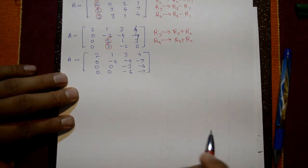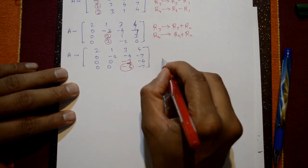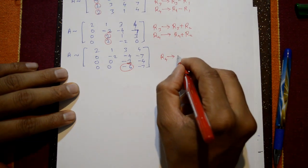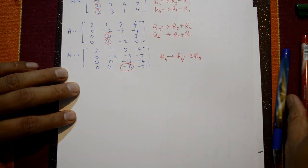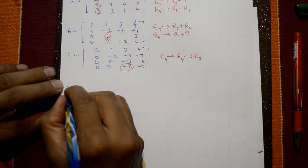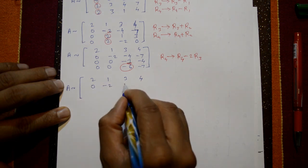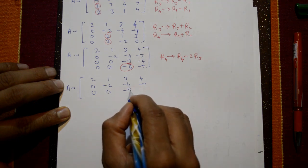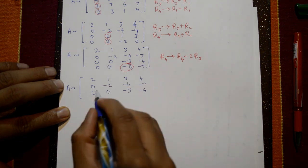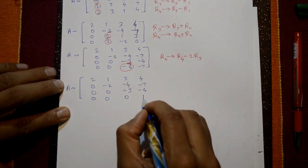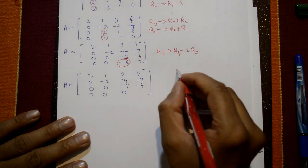The leading number in column 3 is -3, and below it is -6. We apply R4 = R4 - 2R3 using the third row. This gives R4: 0, 0, 0, 1. Now we have a leading 1 in the fourth row. The matrix is approaching echelon form with all required pivots in place.